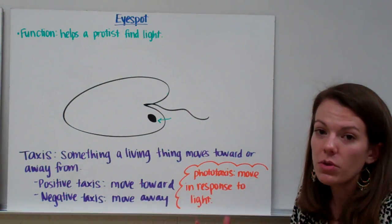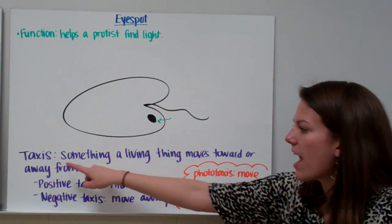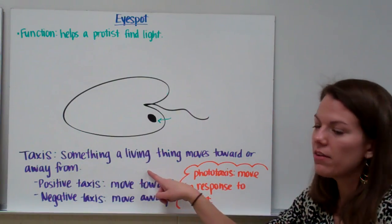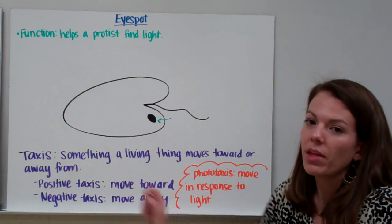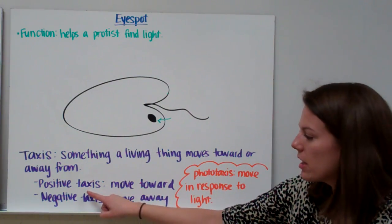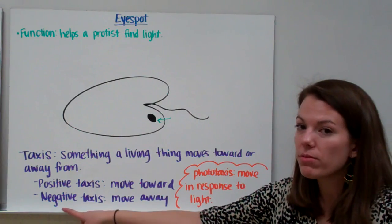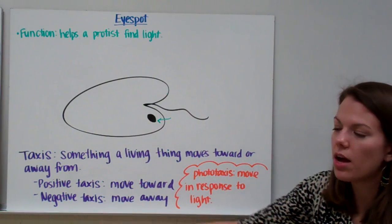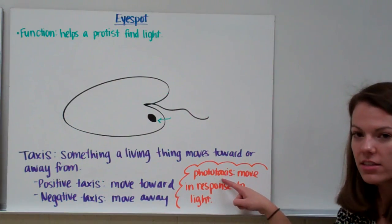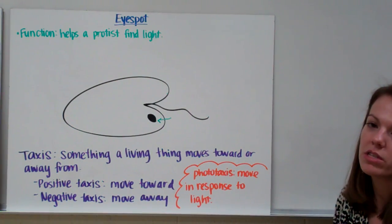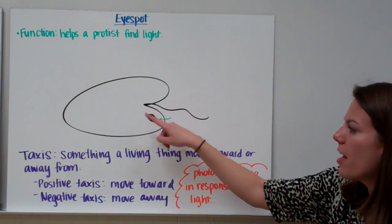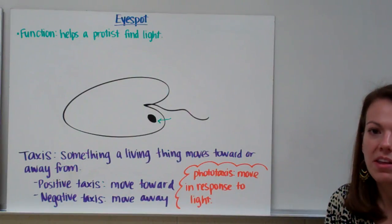A fancy word for something that a living thing moves towards or away from is called a taxis — not taxis, taxis. If a living thing moves towards something, that's called a positive taxis. If a living thing moves away from something, that's called a negative taxis. There are lots of different types of taxis. One is called phototaxis, which is when a living thing moves in response to light — photo literally means light. So again, it's the eye spot that helps the protist figure out where the light is.